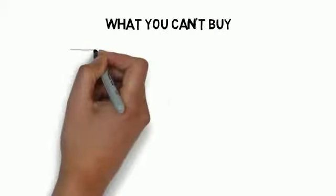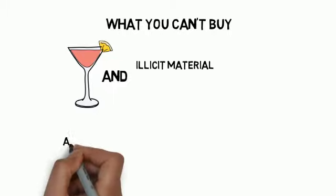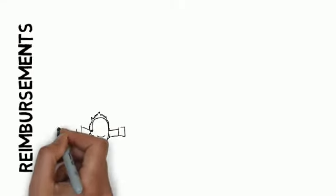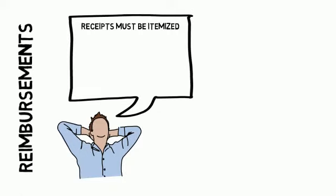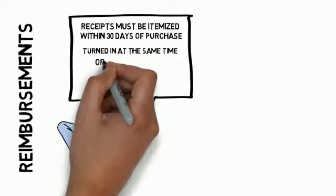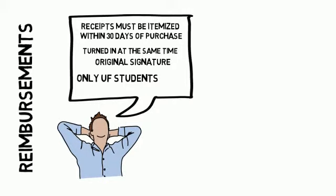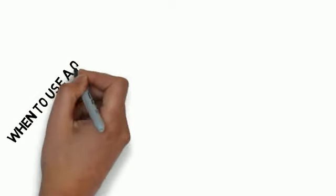What can you buy using SG Finance? You cannot purchase alcohol for human consumption or illicit materials, and as a reminder, student body treasurer approval is required prior to purchase of goods or services. For reimbursements, all receipts must be itemized and should be turned in within 30 days of date of purchase. All receipts for a given student activity request must be turned in at the same time. Original signature of the individual being reimbursed is required. Only UF students can be reimbursed — no staff, faculty, advisor, etc.